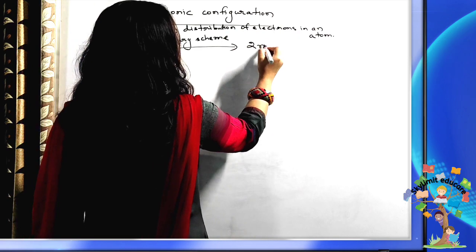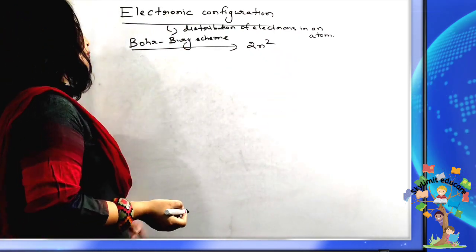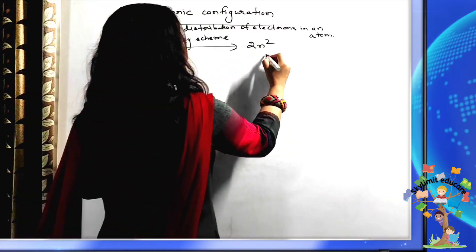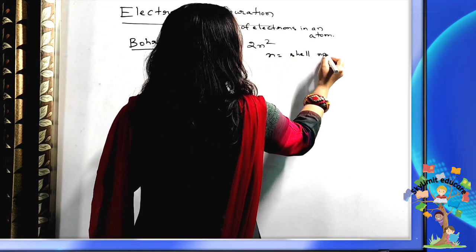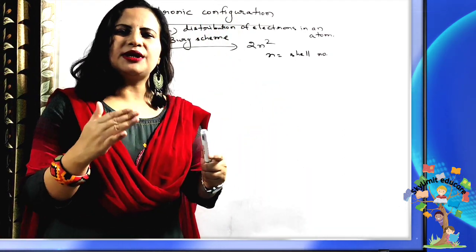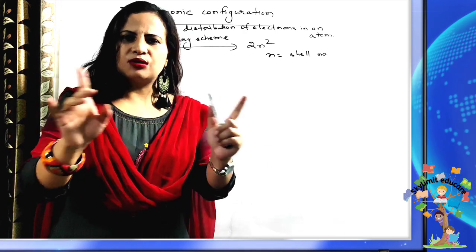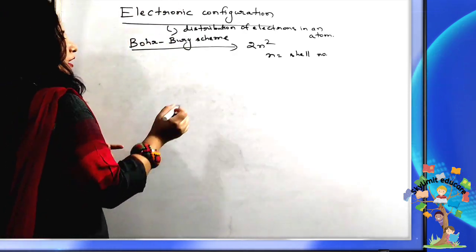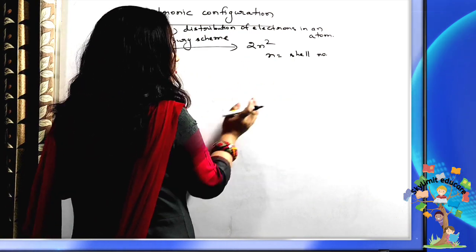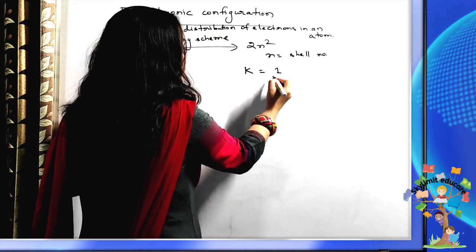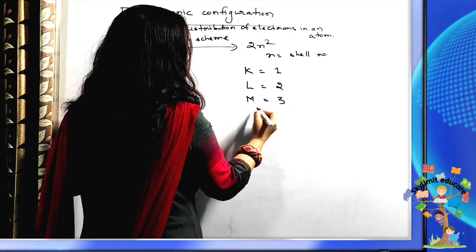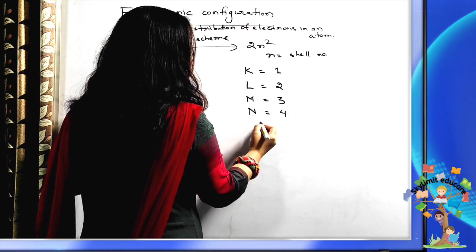Bohr and Bury proposed the formula 2N², where N is the shell number, to determine how many electrons will be distributed in various orbits around the nucleus. We have the K shell numbered 1, L shell numbered 2, M shell numbered 3, and N shell numbered 4 and so on.